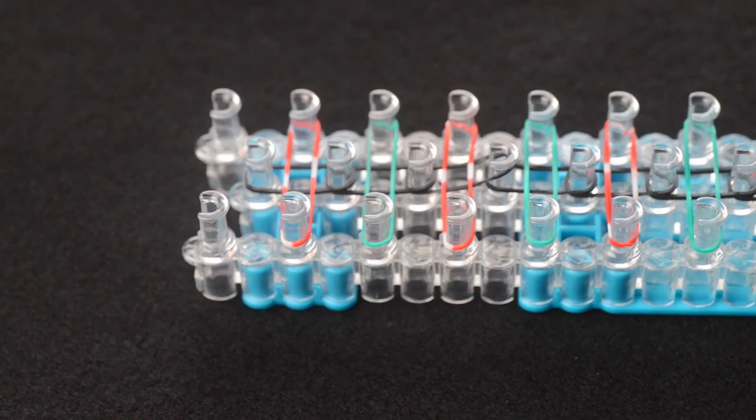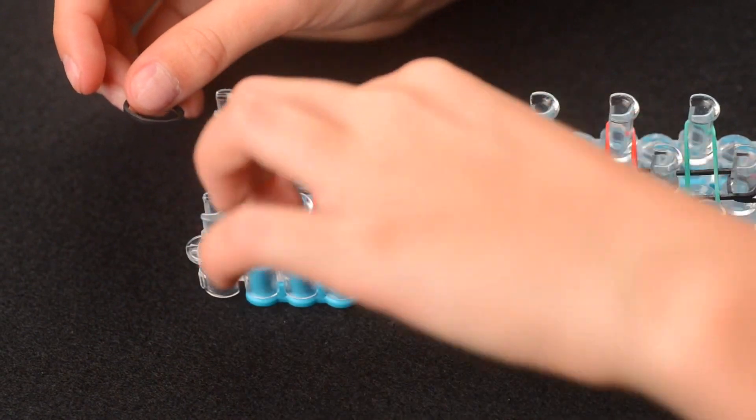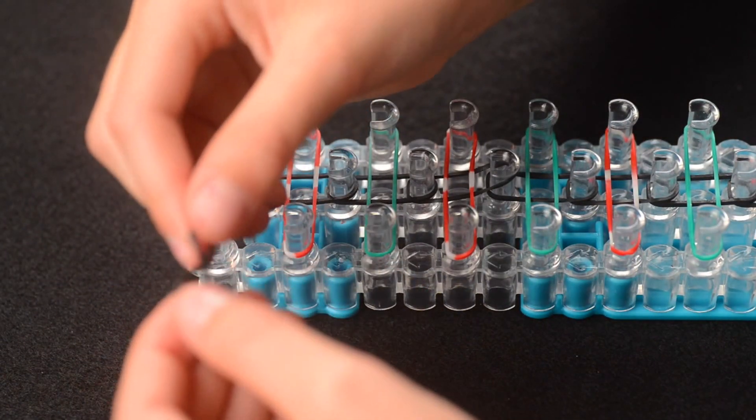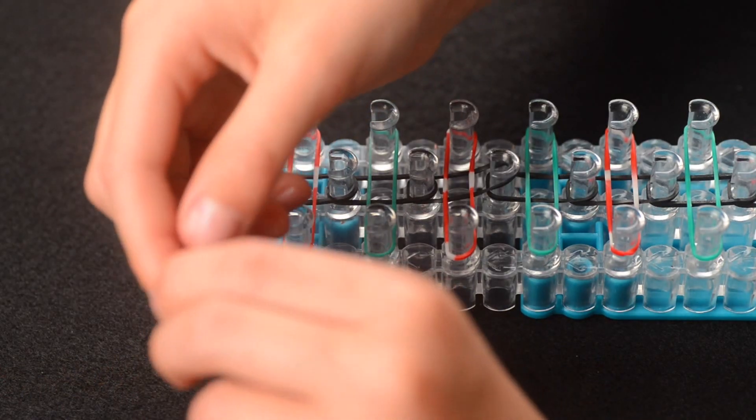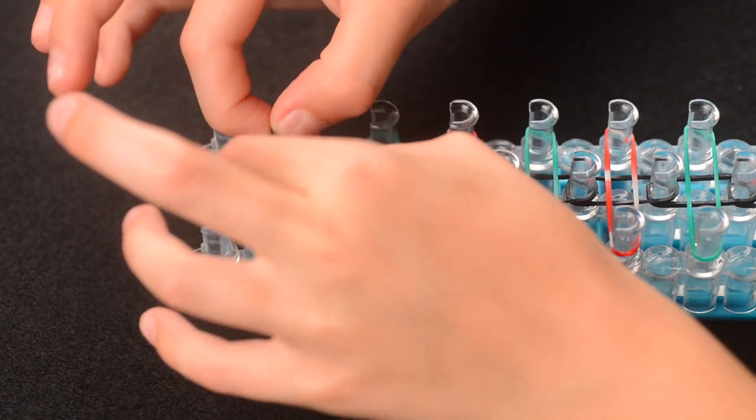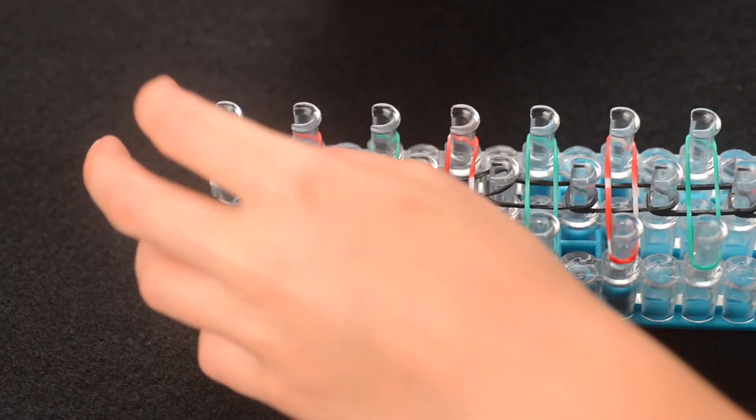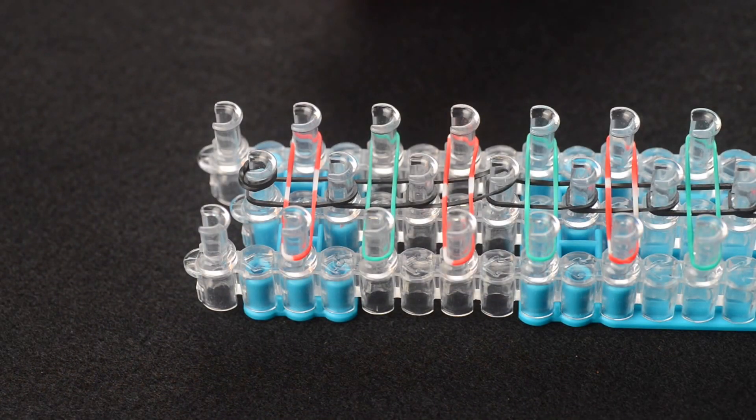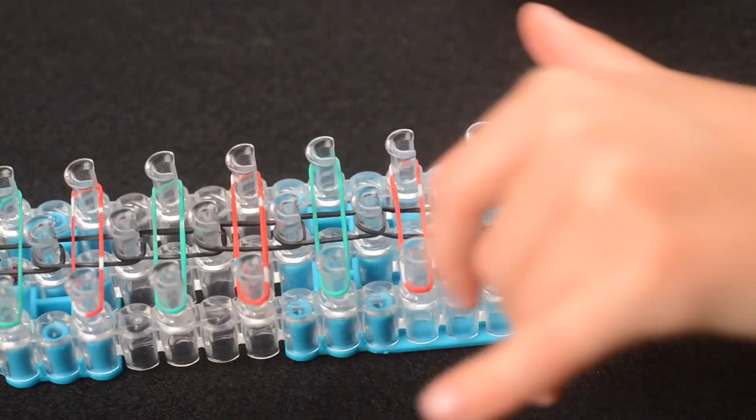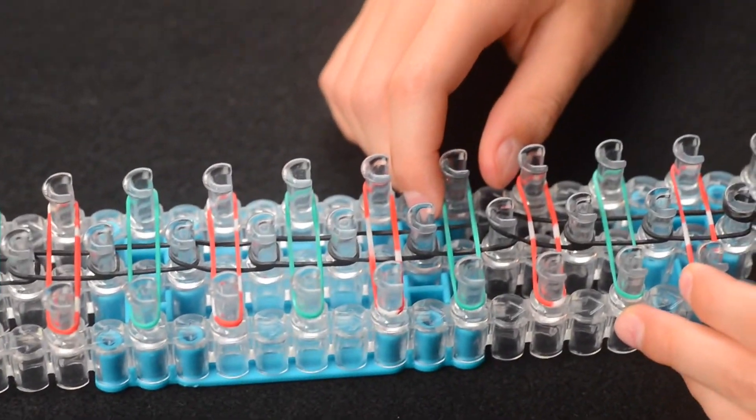So we're going to add one more band just as a capping band on the end middle peg. So just wrap it around and put it back over itself. And then stretch it on the last middle peg. Now we can turn our loom around so that the red arrow is pointing towards us.